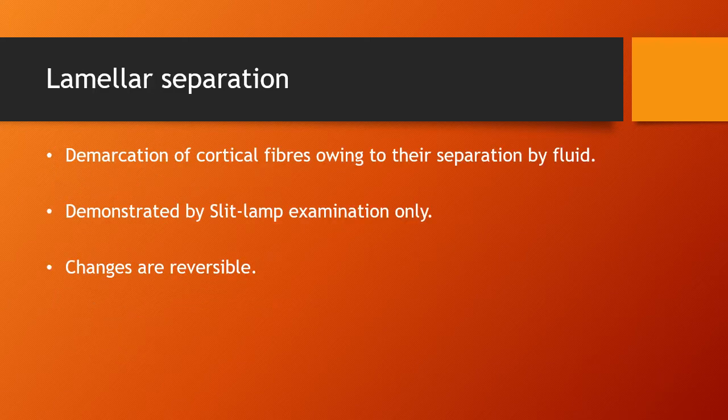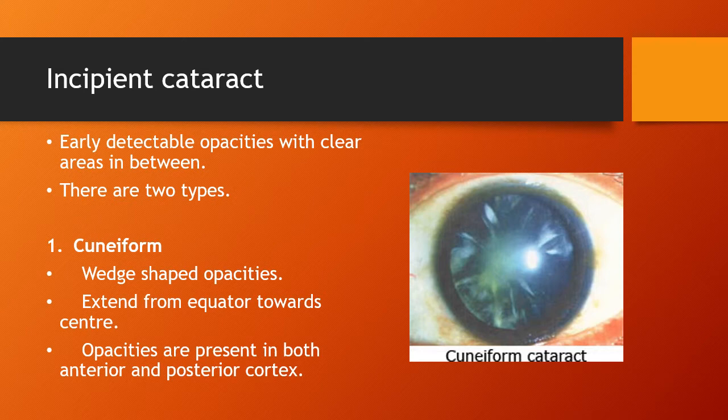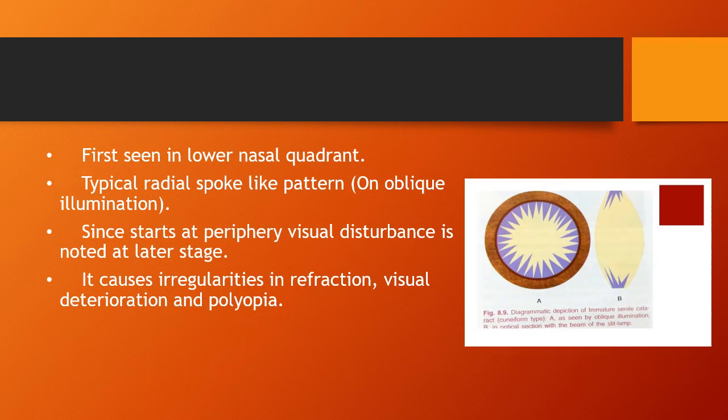The first stage is lamellar separation, in which there is demarcation of the cortical fibers owing to their separation by fluid. It is only demonstrated by slit-lamp examination and the changes in lamellar separation are reversible. Next is the incipient cataract, in which there are only detectable opacities with clear areas in between, of two types: cuneiform and cupuliform. In cuneiform cataract, there are wedge-shaped opacities which extend from equator towards the center, present in both the anterior and posterior cortex. These opacities are first seen in the lower nasal quadrant, with a radial spoke-like pattern seen on oblique illumination. Since they start at the periphery, visual disturbance is noted at a later stage.